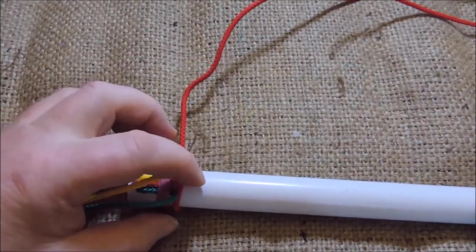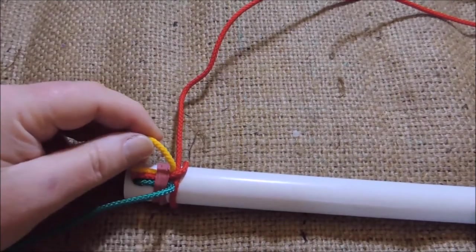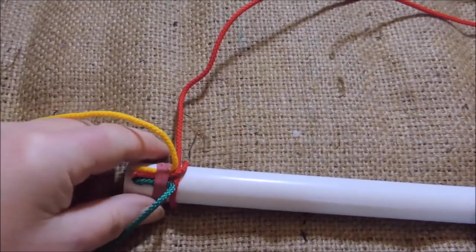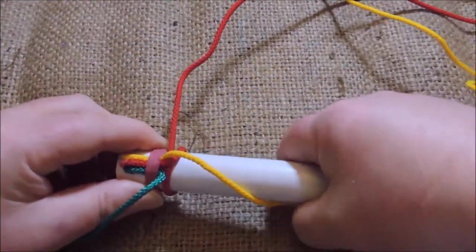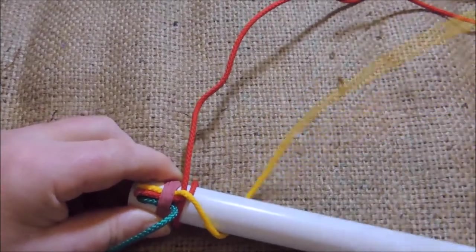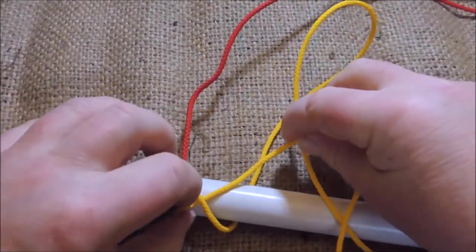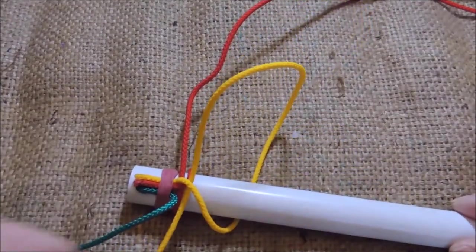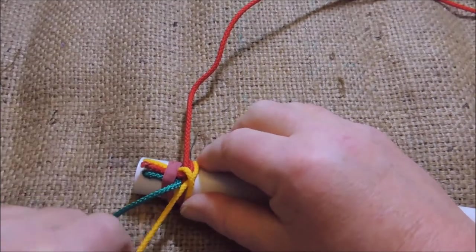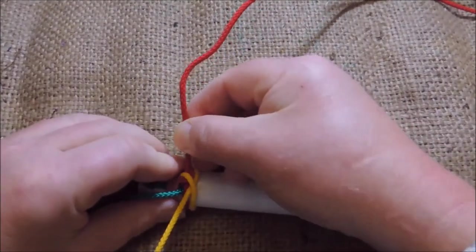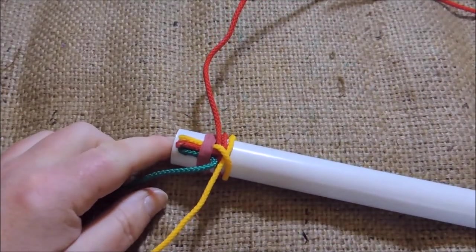OK. My process is, I go middle, left, then right. So the left one is the yellow. So what we do now, is we bring the yellow cord round the back of the pipe, and then pass the end through that piece there, underneath, and pull it through. And there we go. We've now got two of them wrapped around our PVC pipe, like so.